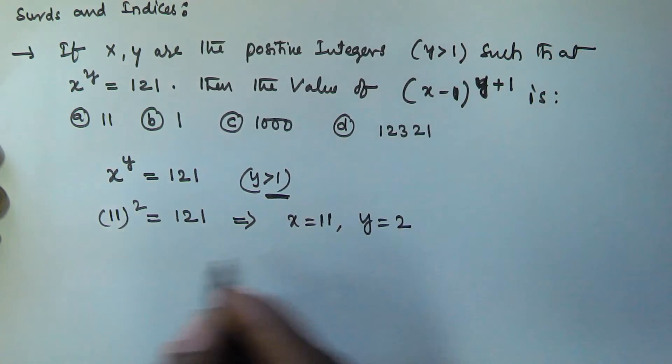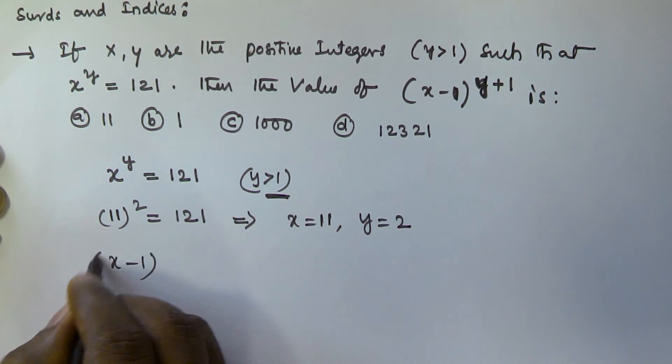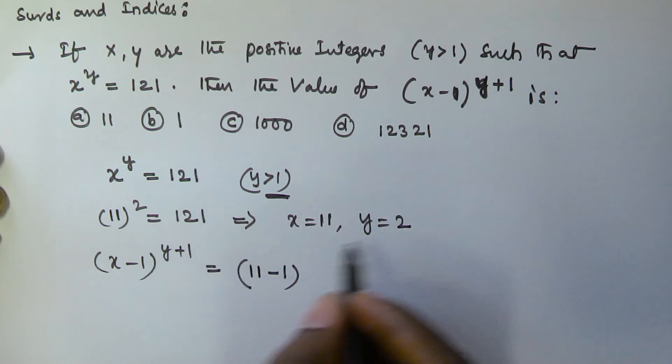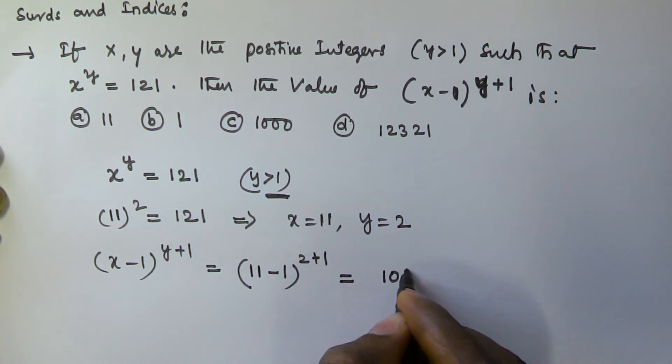Now we have to find the value of (x minus 1) to the power of (y plus 1). We know x is equal to 11, that is 11 minus 1, to the power of y plus 1, where y is equal to 2 plus 1. So that is going to be equal to 10 to the power of 3, which equals 1000.